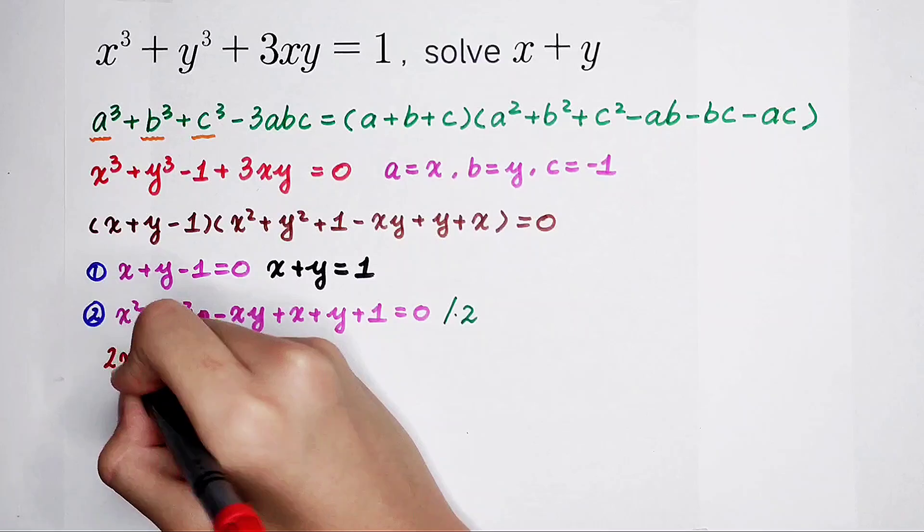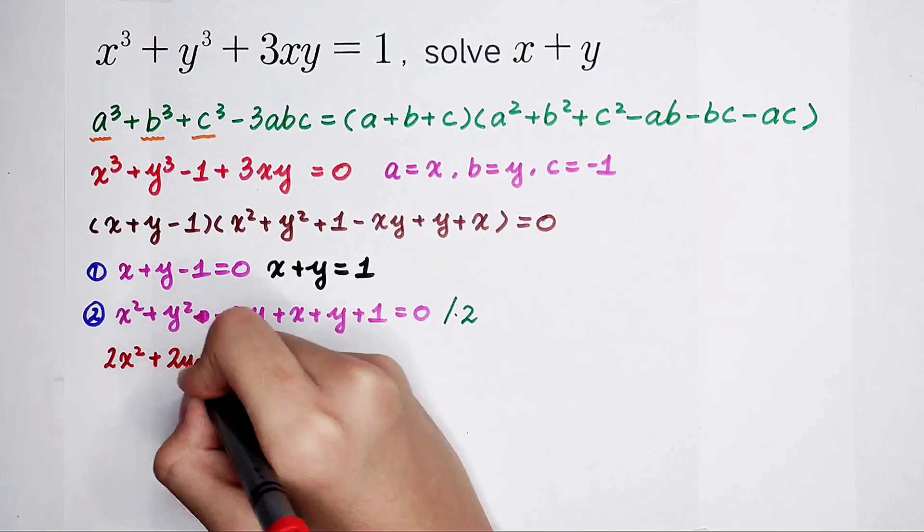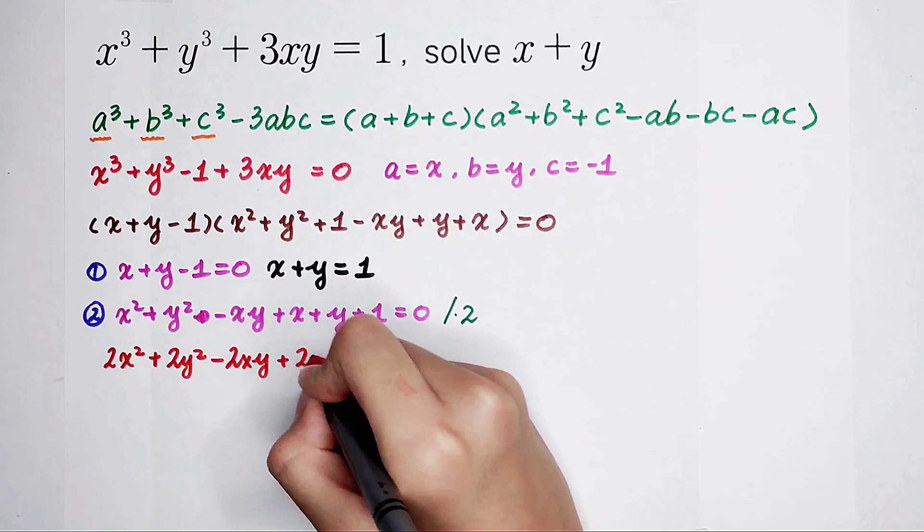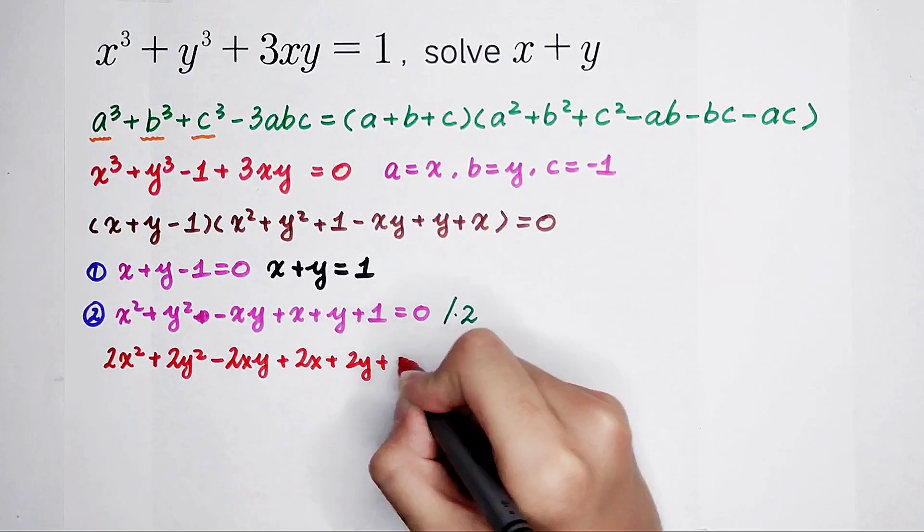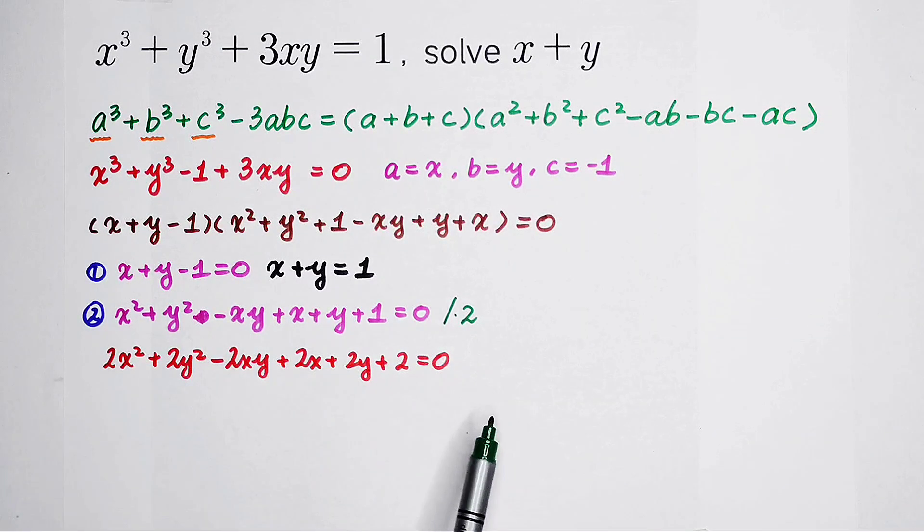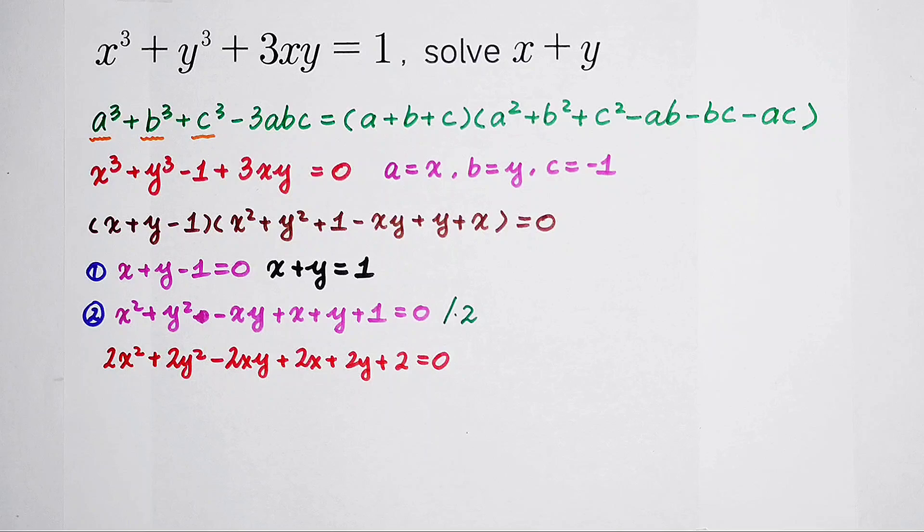It is 2x squared plus 2y squared minus 2xy plus 2x plus 2y plus 2, equals 0. Don't worry, it just looks horrible, but it's very easy.